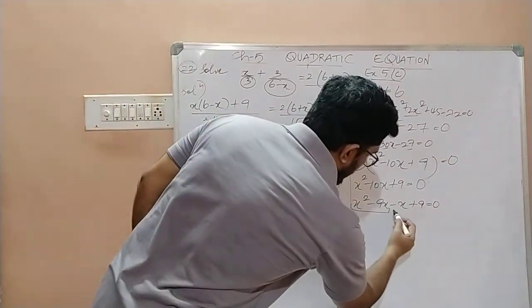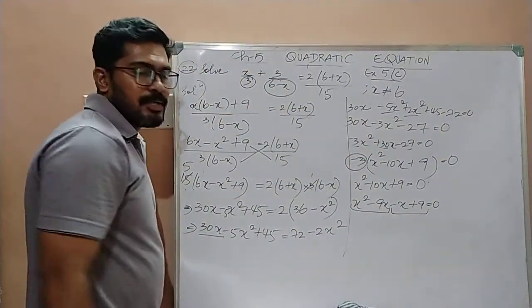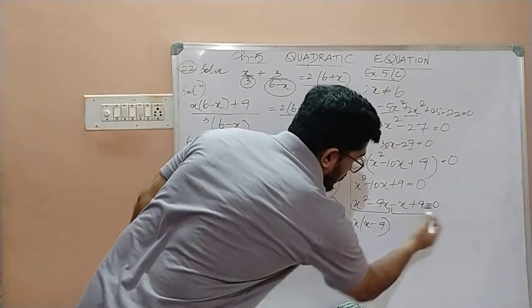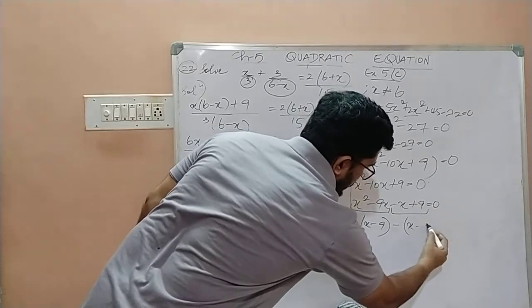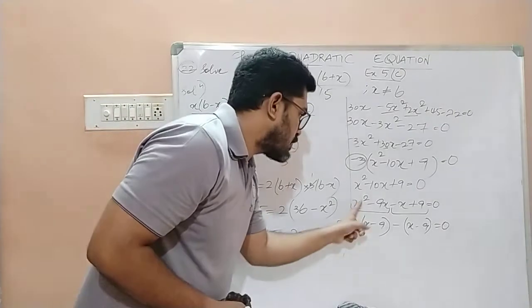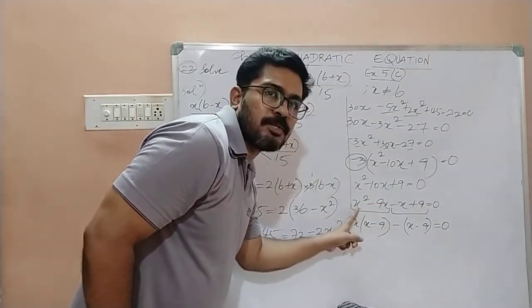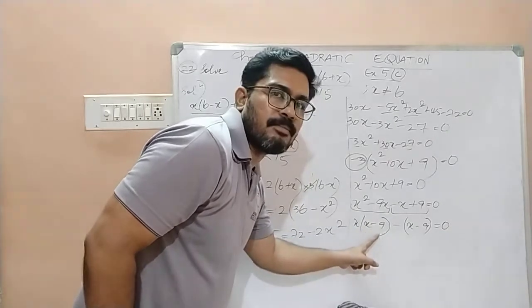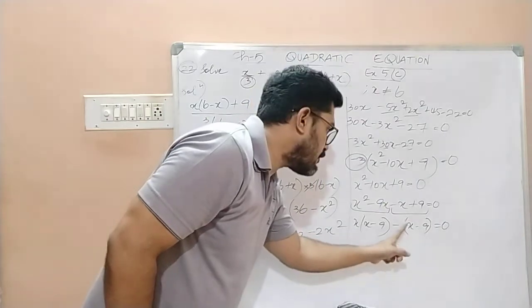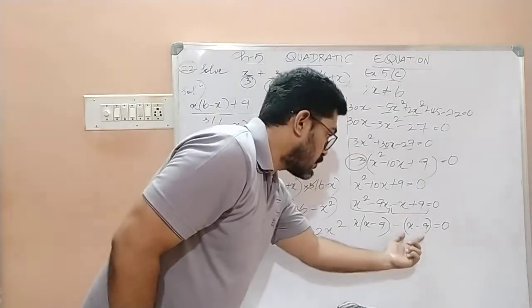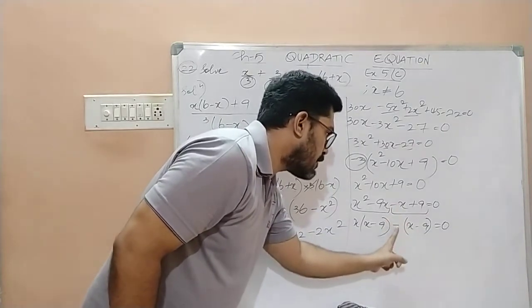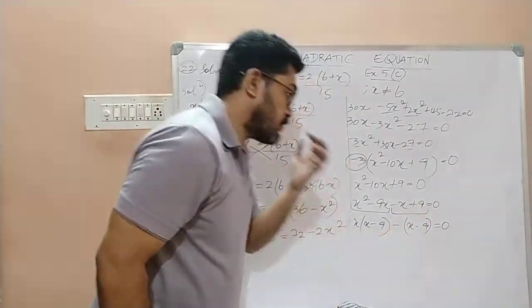So, here, let us group it. x square minus 9x. Which is x into x minus 9. And here, minus of x minus 9. Which is equal to 0. This is correct. From x square minus 9x, I have taken x common. So, inside the bracket, I will have x minus 9. From minus of x plus 9, I have taken minus 1 common. So, inside the bracket, I will have x minus 9. Cross check it. When you open this bracket, it should be minus of x. And minus of minus 9, which is plus 9. So, it is correct.